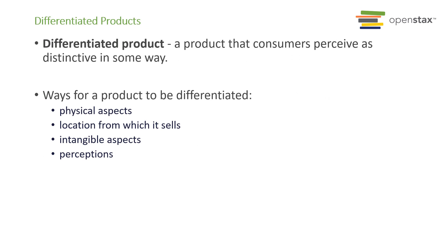A differentiated product is whenever the consumer perceives the product in a very distinctive way — the scent, the color, even the touch. Companies try to take advantage of differentiation to distinguish themselves and set themselves apart. For example, in monopolistic competition, think about the clothing industry: Gap, Forever 21, H&M all sell something very similar, but minor differences allow companies to distance themselves from competitors and charge higher prices. So you have many companies all selling similar but differentiated goods.